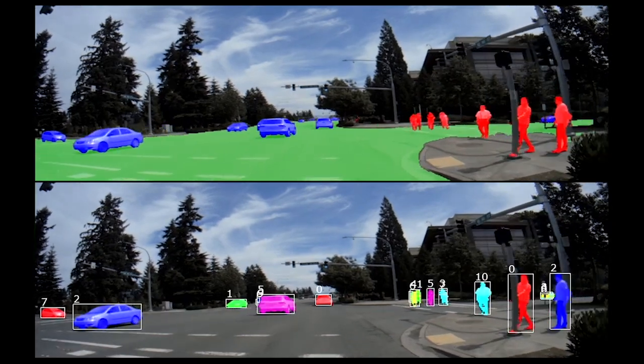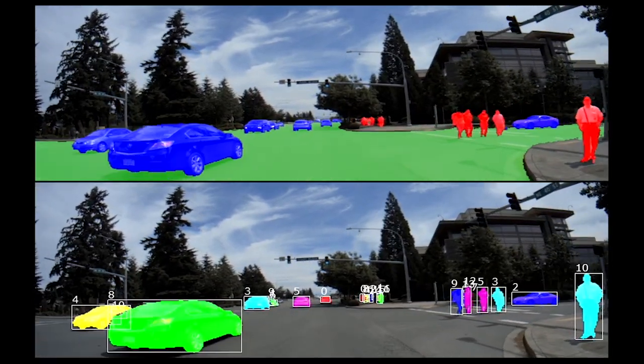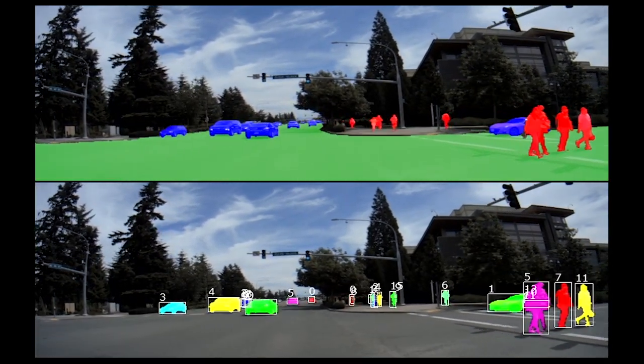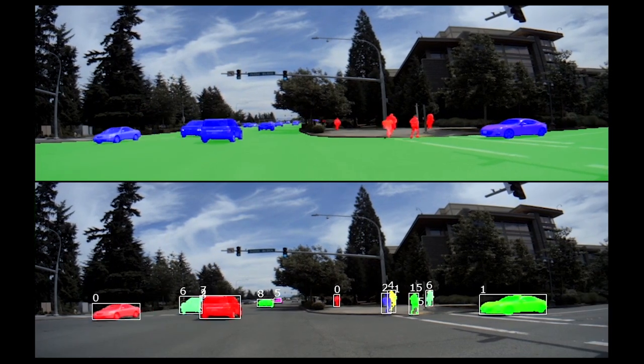In the top video, we see pixel-level shape segmentation results for different object classes, with vehicles in blue, pedestrians in red, and drivable space in green.